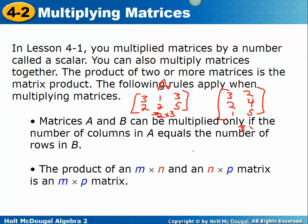So if A is 2 by 3 and B is 3 by 2, A has 3 columns and B has 3 rows — those two things have to equal each other. When you multiply an M by N matrix by an N by P matrix, the N's are the same in both, and the result will be an M by P matrix. So in this example, multiplying them gives a 2 by 2 matrix because the 3s match and you're left with 2 rows by 2 columns.